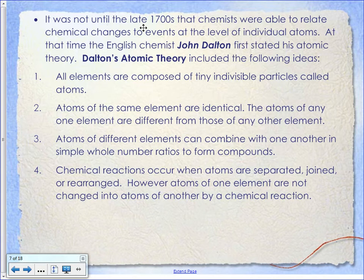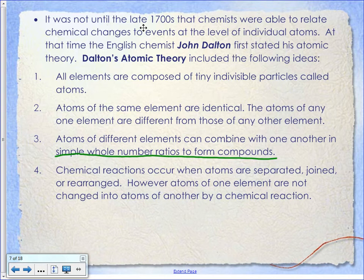The third thing that Dalton came up with was that atoms of different elements can combine with one another in simple whole number ratios to form compounds. What he means by that is you never find a compound that only has half of an atom in it. You can't have half of an atom in something, because if you do, you've split it — and we can't do that in a chemical reaction. Chemical reactions are not going to cause a nuclear explosion to occur.